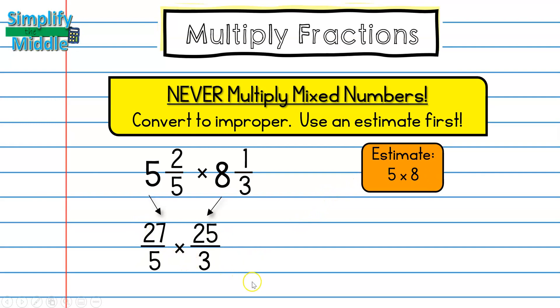Now we're ready to multiply straight across. So 27 times 25 for my numerator and 5 times 3 for my denominator. This is a very large problem. So I'm definitely going to be trying to cross cancel before I multiply. So of course, across from here, I can see these have a common factor of 5 and these have a common factor of 3.